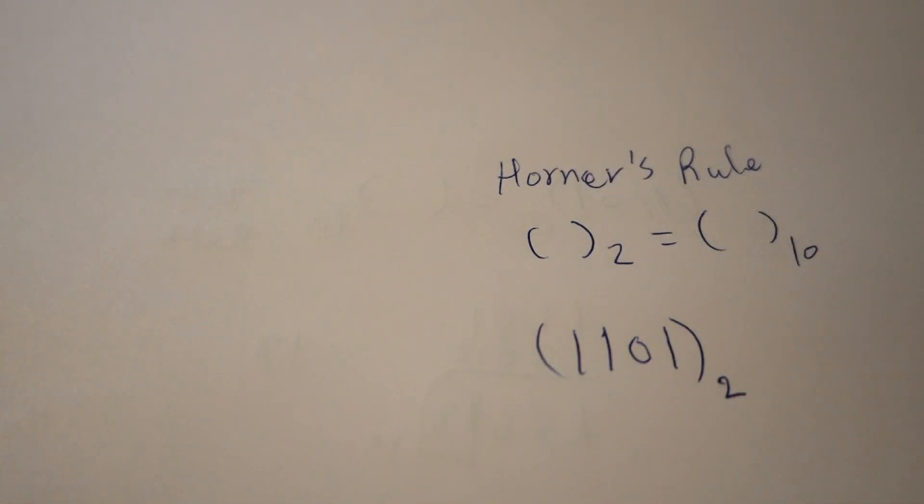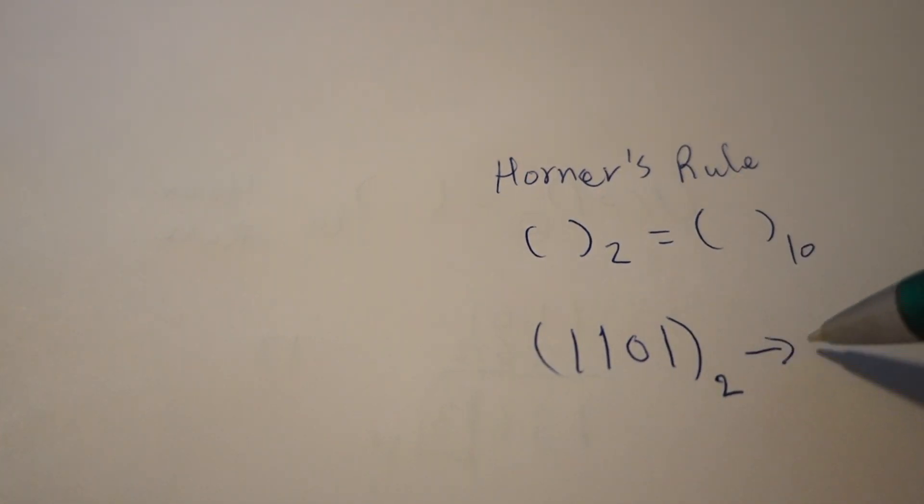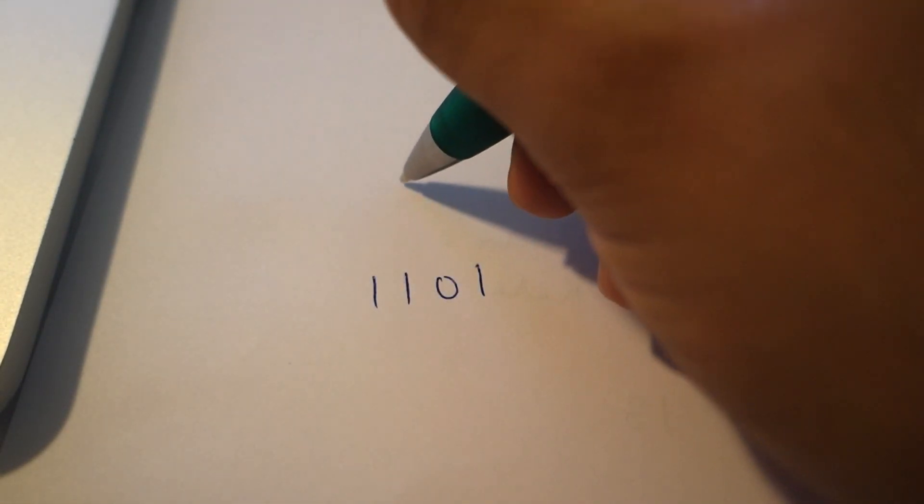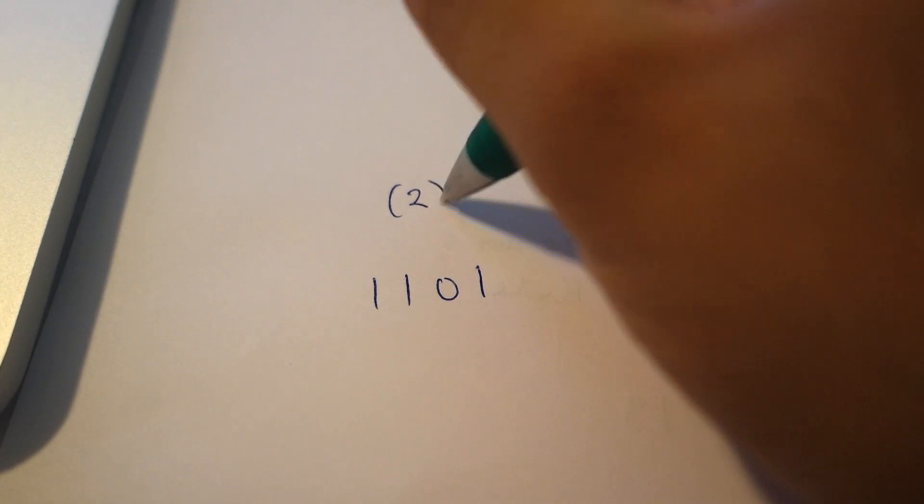You basically take the number and use the old radix to convert it to the new radix. So every time we're going to multiply by 2 and then we add whatever digit.